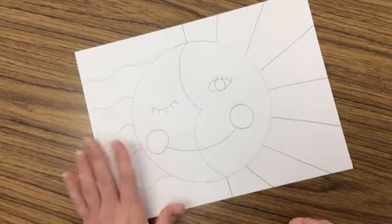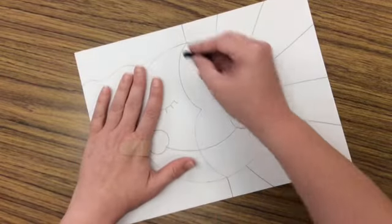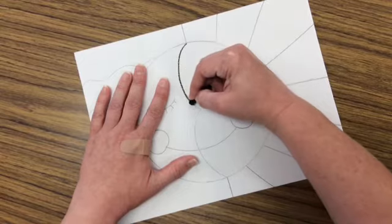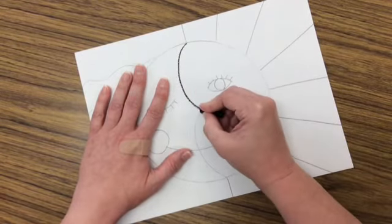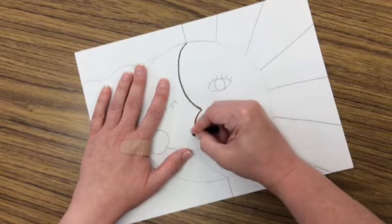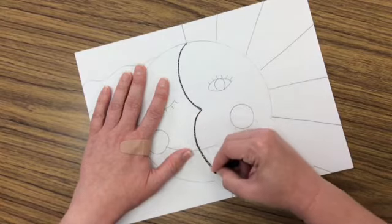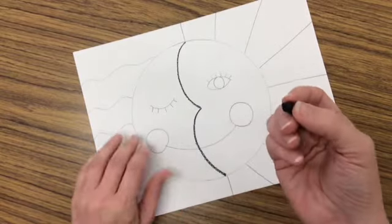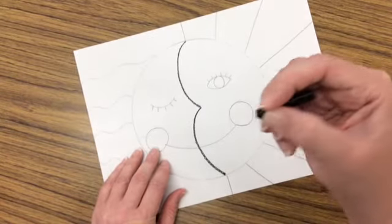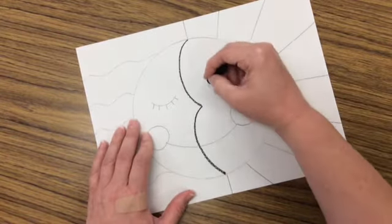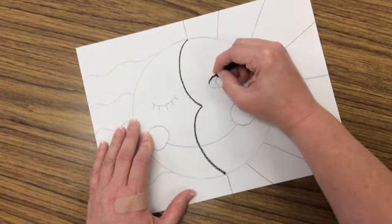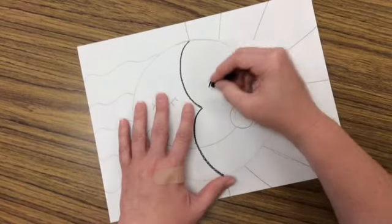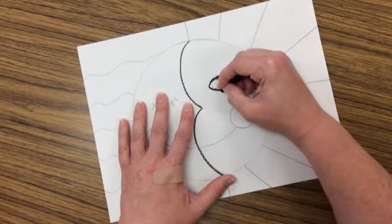It doesn't matter where you start doing your tracing, but the thing you want to do is make sure you're pushing firmly and you're getting right on top of those pencil lines. One thing that helps me push a little firmer is to put my fingers really close to the end and that way I can push a little harder. And if I didn't get right on the pencil line, I just go over it again and make that line a little thicker. That's okay.